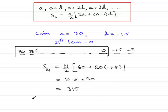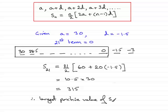Therefore, the largest positive value of Sn is equal to 315. That brings us to the end of this question — I hope you've been able to follow along.